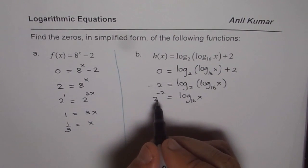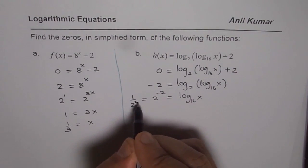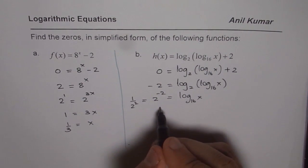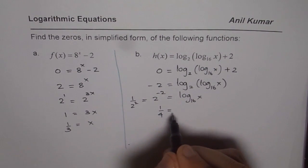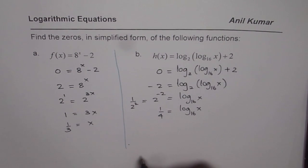2 to the power of minus 2 really means 1 over 2 squared, and that is 1 over 4. Let me write this as 1 over 4 equals log to the base 16 of x.